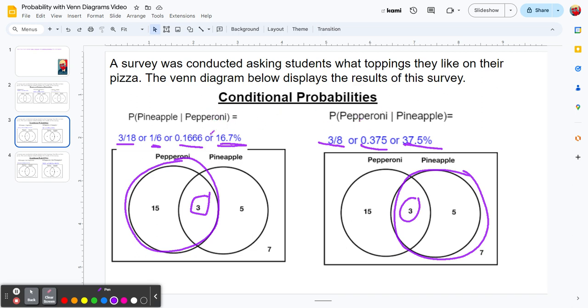On the left, the condition is they like pepperoni, so there's 18 people in that condition. On the right, the given condition is they like pineapple - there's only 8 students in that condition.